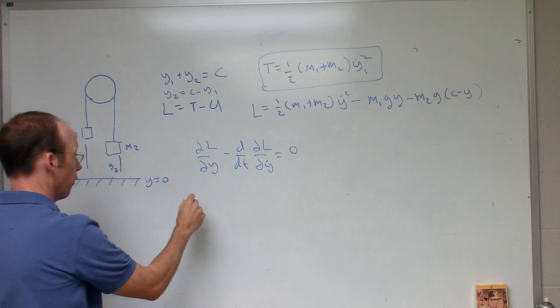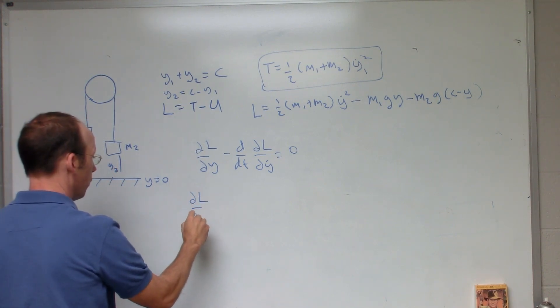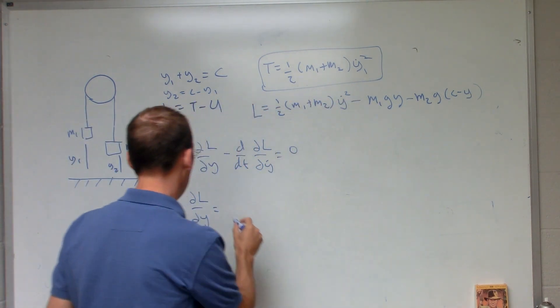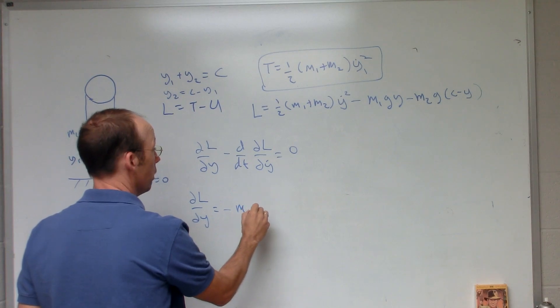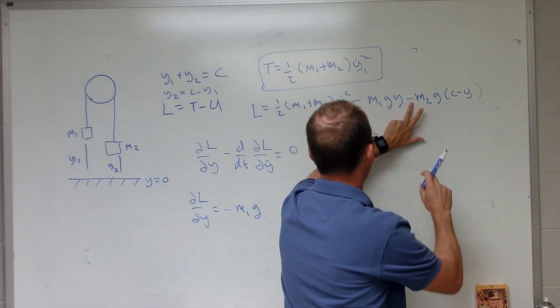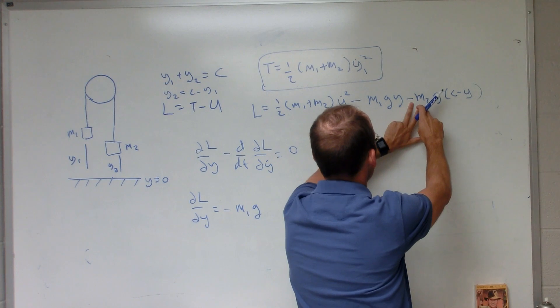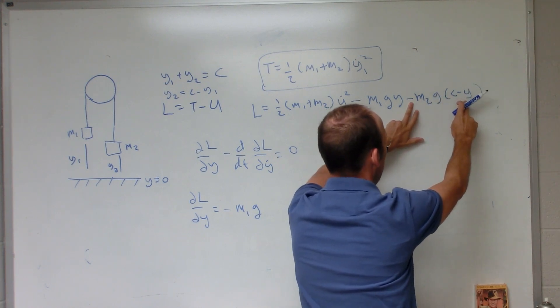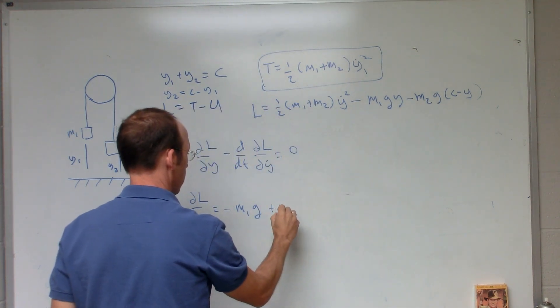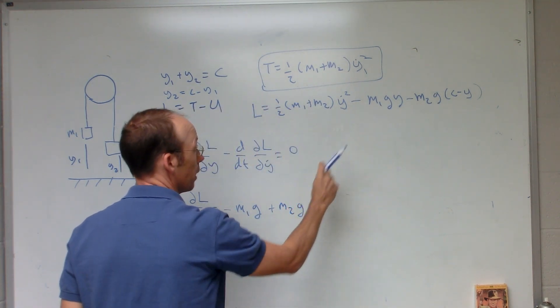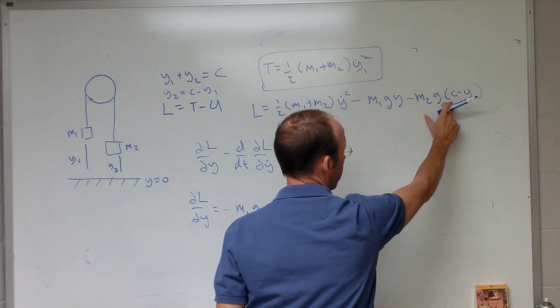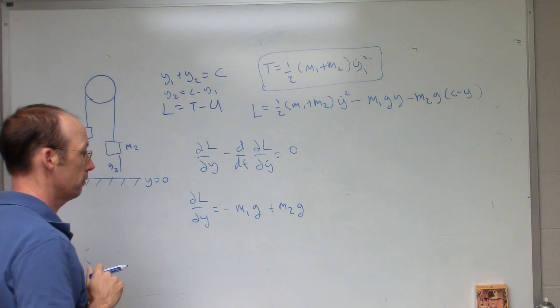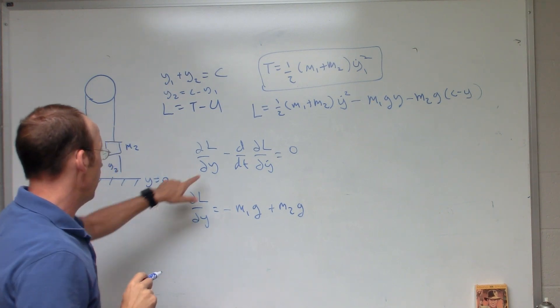So let's do this first. The partial of L with respect to Y. There's no Y right there. Here I get negative M1 G. And here I get, that's going to give me a constant that goes away. And I'm going to get a positive M2 G. Right? Because I have a negative times that and it goes away. Negative times a negative gives me a positive. And then I take the derivative and I just get M2 G. So that's that piece.